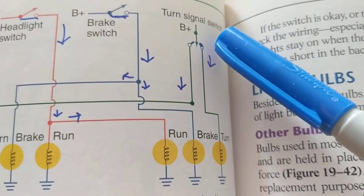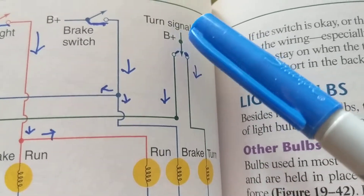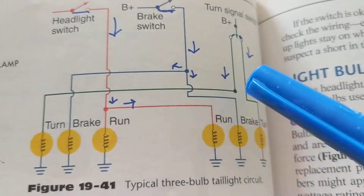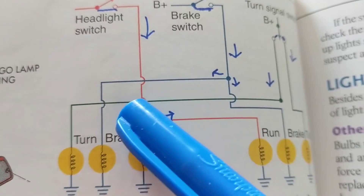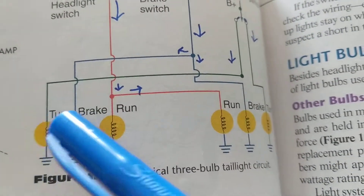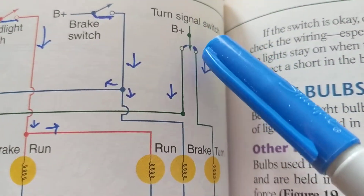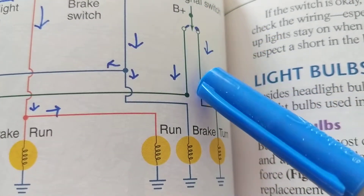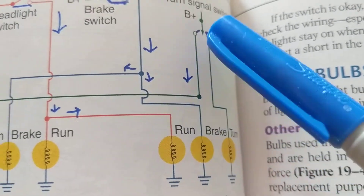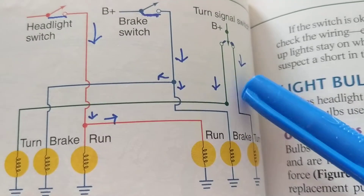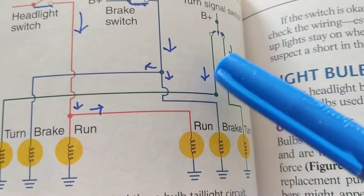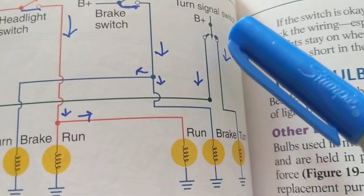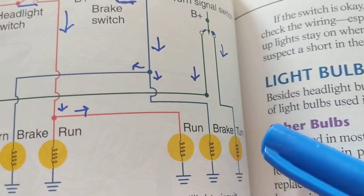When you flip the switch — say you want to make a left signal — you're flipping it to the other terminal. Current then follows that path, shown in green, to the other turn signal bulb. Notice it doesn't label left or right on the schematic — we have to use our schematic analysis. One terminal can be for the right, the other for the left, or vice versa. What matters is that only one is activated when the switch is engaged.